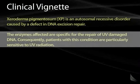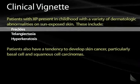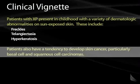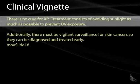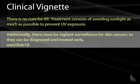The specific enzymes affected in xeroderma pigmentosum are those responsible for repairing ultraviolet light-damaged DNA. As a result, patients are particularly sensitive to UV radiation such as that from the sun. Patients with XP present in childhood with dermatologic abnormalities including freckles, telangiectasias, and hyperkeratosis, mostly on sun-exposed skin. They also have a tendency to develop skin cancers such as basal cell carcinoma and squamous cell carcinoma early in childhood. There is no cure; the best treatment is to avoid UV radiation, stay out of sunlight, and maintain vigilant surveillance for skin cancer.